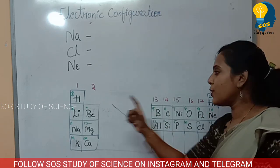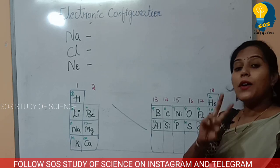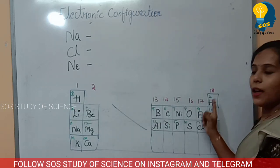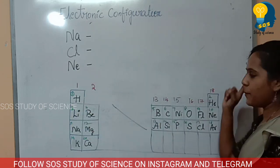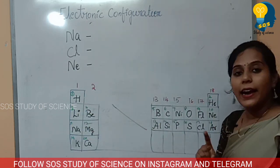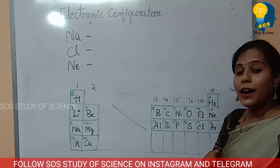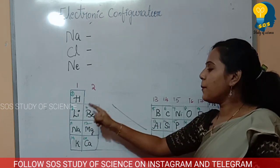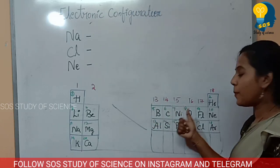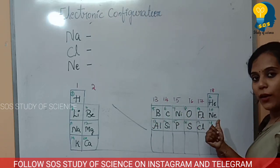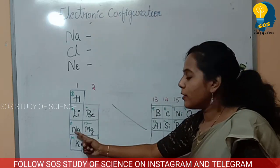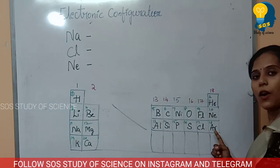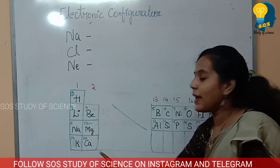First row has 2 elements: hydrogen and helium. Second row has 8 elements: lithium, beryllium, boron, carbon, nitrogen, oxygen, fluorine, neon. Third row has 8 elements: sodium, magnesium, aluminium, silicon, phosphorus, sulfur, chlorine, argon. Fourth row: potassium and calcium. Write this chart and memorize it.